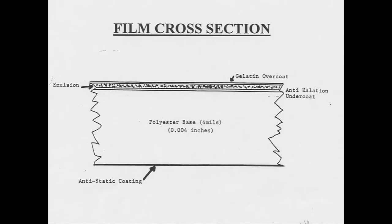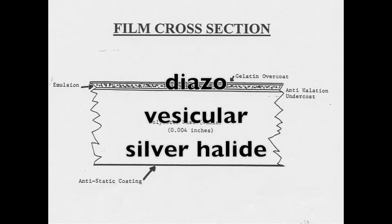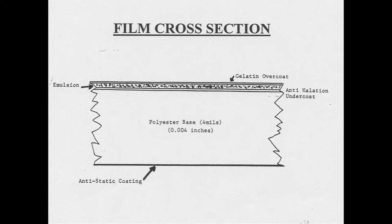Now let's talk about emulsion. Emulsion is the light sensitive layer atop the film base, and it's here that the images reside. There are three emulsions we're concerned with in microfilm: diazo, vesicular, and silver halide, also called silver gelatin or just silver.